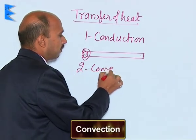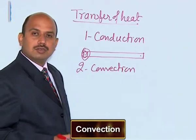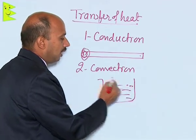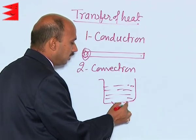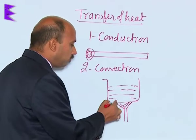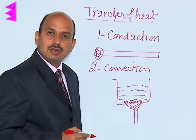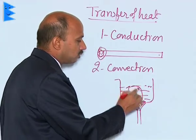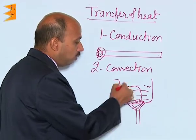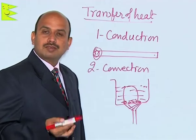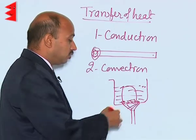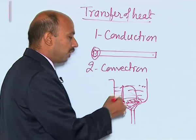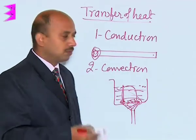The second method is convection. In convection, suppose you take water in a beaker and heat it with a stove. The water molecules at the bottom get heated up, become lighter, and rise to the top, while the cold water molecules come down. By this way the whole water gets heated up — this process is known as convection. In convection, the water molecules are actually moving and being displaced: molecules at the bottom come to the top and molecules at the top come to the bottom.